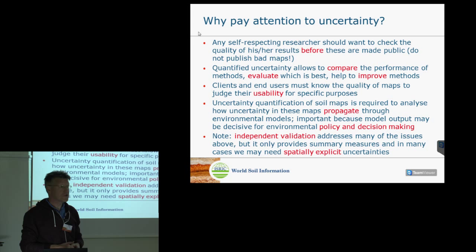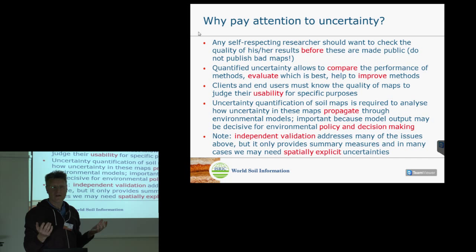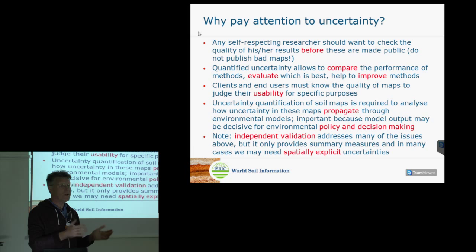Another benefit of quantifying map uncertainty is that it allows us to compare methods. We looked at ordinary kriging and regression kriging with a linear model, and yesterday you learned about random forests and other machine learning techniques. Which method is best depends on how accurate it is, so quantifying accuracy gives us a tool to compare methods.